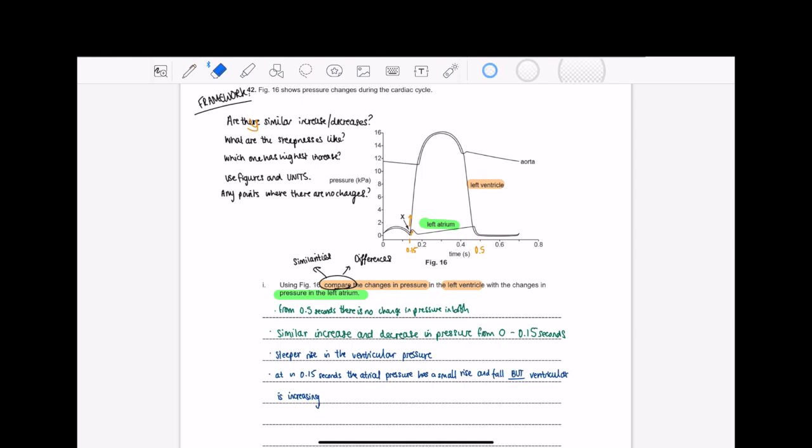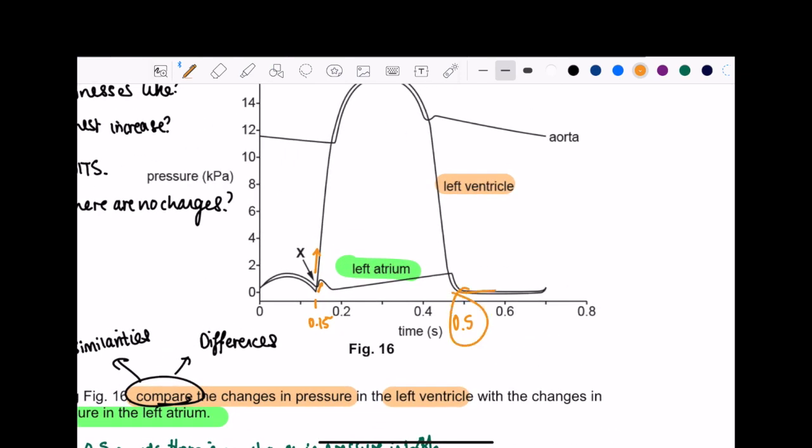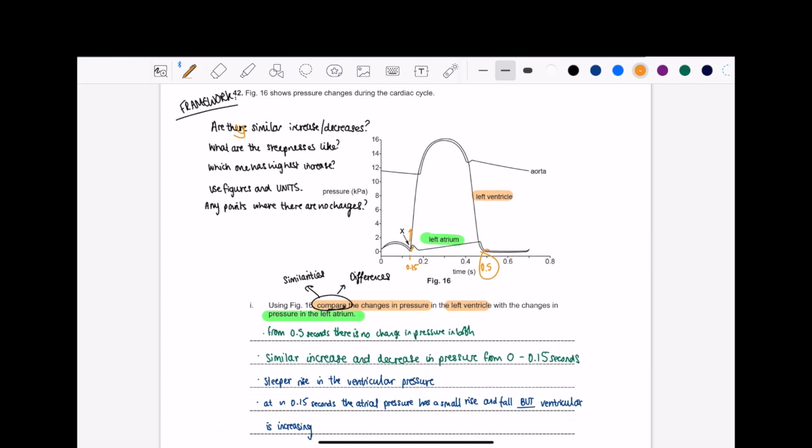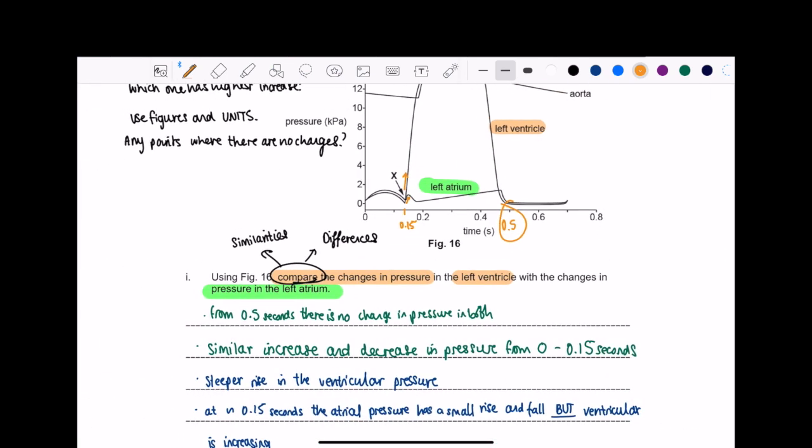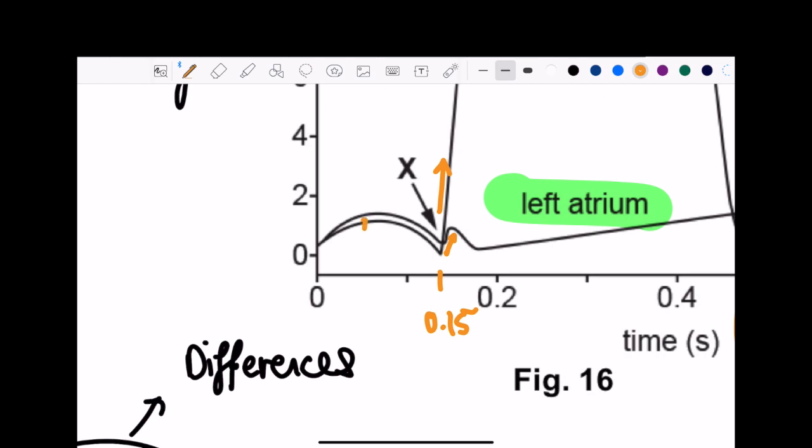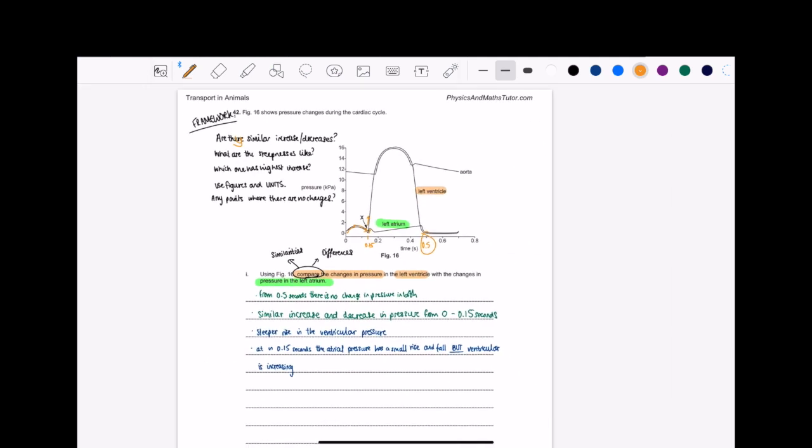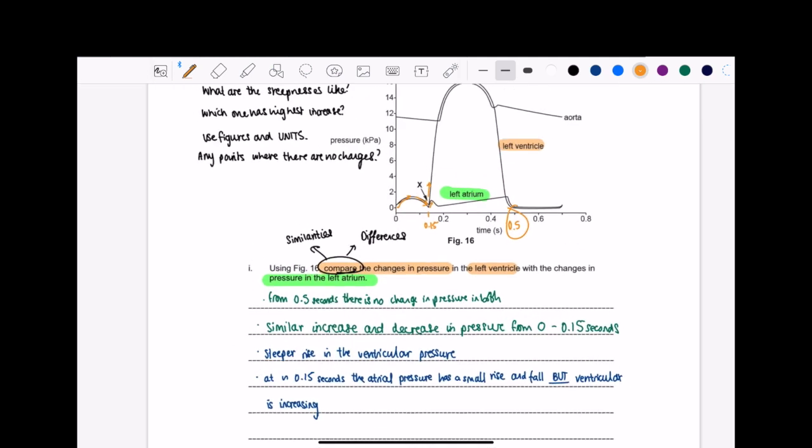So as I work through each of these questions, it adds up to the answer. The first one, from 0.5 seconds there's no change in pressure, right? So where is 0.5? It's here. There is no change in both of them, so I compared them. It's a similarity, great, that's one mark. Next one, similar increase and decrease in pressure from 0 to 0.15 seconds. So it's here. I'm saying there are similar increase and decrease. Do you see how both of them, the gap between them is quite small? So when they're increasing, it's essentially very similar, and when they're decreasing, again it's similar. So that's two marks already.